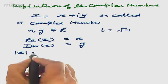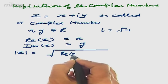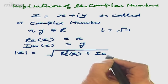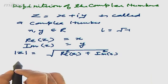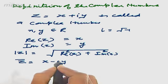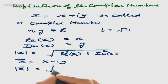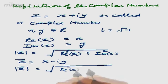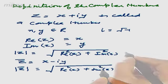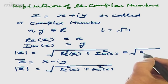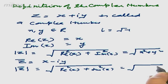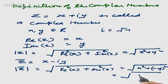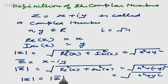The modulus of z is defined as |z| = √(Re(z)² + Im(z)²). The conjugate of the complex number is z̄ = x − iy. Then the modulus of z̄ is defined as √(Re(z)² + Im(z)²), which equals √(x² + (−y)²) = √(x² + y²). We can see that |z| = |z̄|.